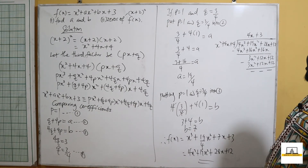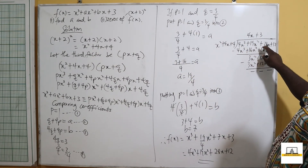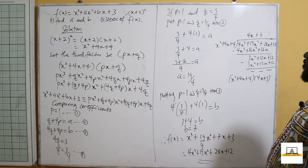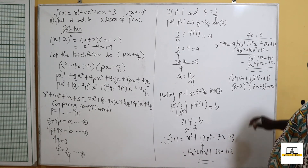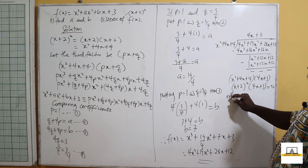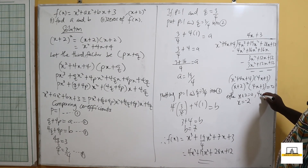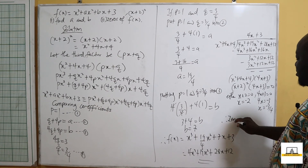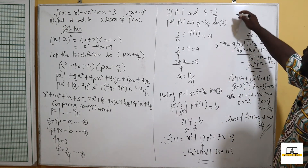So the factors of 4x cubed plus 19x squared plus 28x plus 12 are x squared plus 4x plus 4 and 4x plus 3. Factorizing x squared plus 4x plus 4 gives x plus 2 all squared, so the full factorization is (x plus 2) squared times (4x plus 3) equals 0. Setting each factor to zero: x plus 2 equals 0 gives x equals negative 2 (a repeated root), and 4x plus 3 equals 0 gives x equals negative 3 over 4.